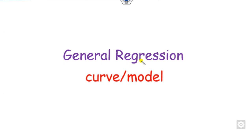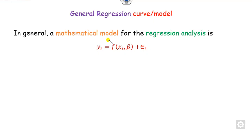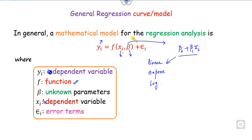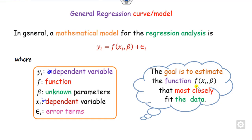What is the general regression model? In mathematics, the regression model can be defined as y = f(x, β) + ε, where f may be a linear function, exponential function, logarithm function, and so on. Here y is the dependent variable, x is the independent variable, ε is the error term, and β represents the unknown parameters. The goal is to find an appropriate function — linear or non-linear — that best fits the given data.